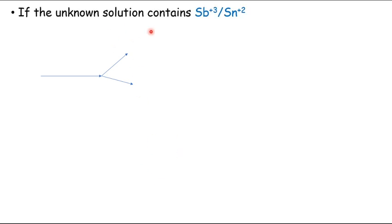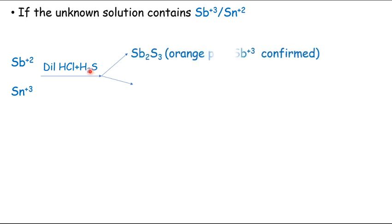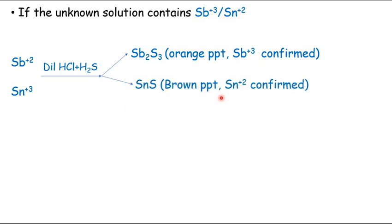If the unknown solution contains antimony trivalent ion, upon the addition of dilute HCl and passing hydrogen sulfide gas we will get an orange precipitate, confirming the presence of Sb³⁺. In case of tin divalent ion, we will get a brown precipitate to confirm the presence of Sn²⁺.